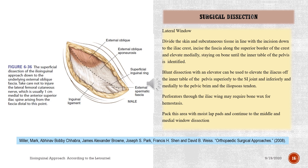Lateral window: divide the skin and subcutaneous tissue in line with the incision down to the iliac crest, incise the fascia along the superior border of the crest and elevate medially, staying on bone until the inner table of the pelvis is identified. Blunt dissection with an elevator can be used to elevate the iliacus off the inner table of the pelvis superiorly to the SI joint and inferiorly and medially to the pelvic brim and the iliopsoas tendon. Perforators through the iliac wing may require bone wax for hemostasis. Pack this area with moist lap pads and continue to the middle and medial window dissection.